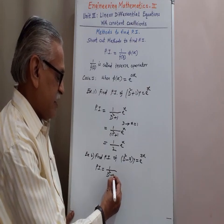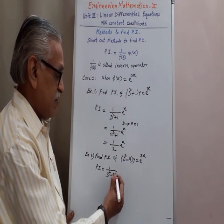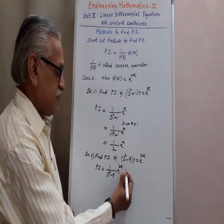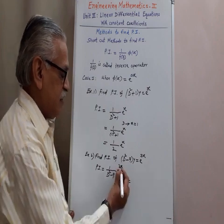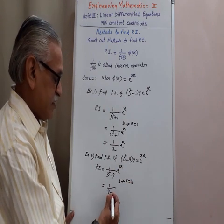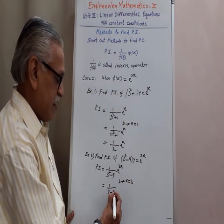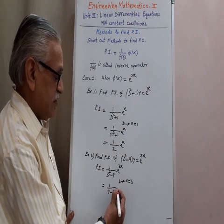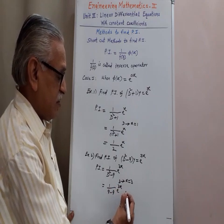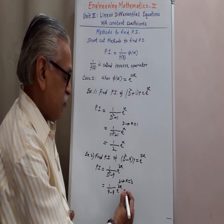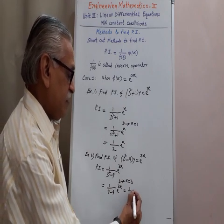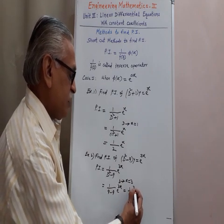As per that, 9 which we have to operate on e raise to 3x is here 3, and therefore we get minus 9 into e raise to 3x, and therefore minus 9 we get 0 into e raise to 3x.